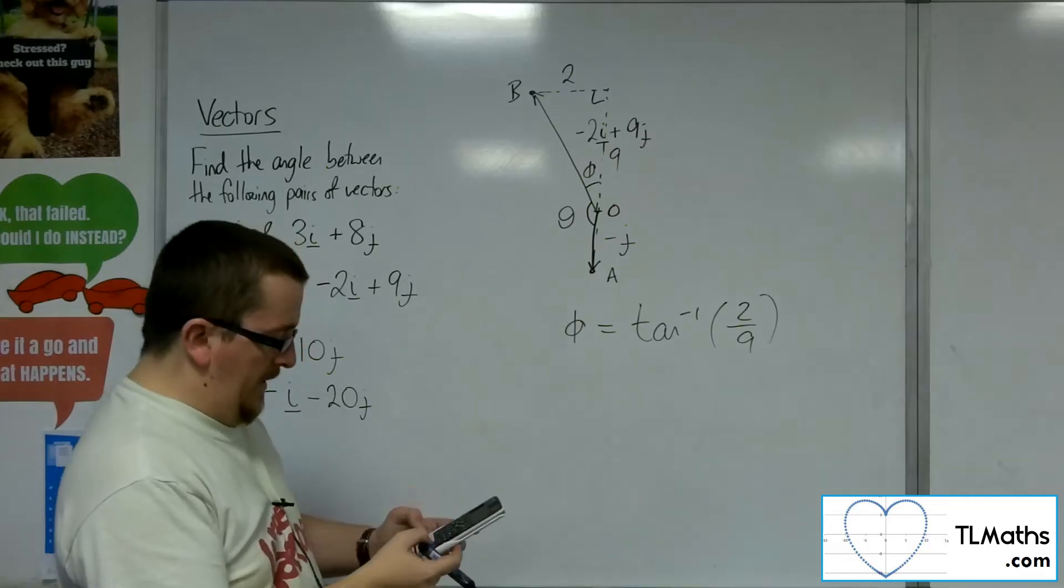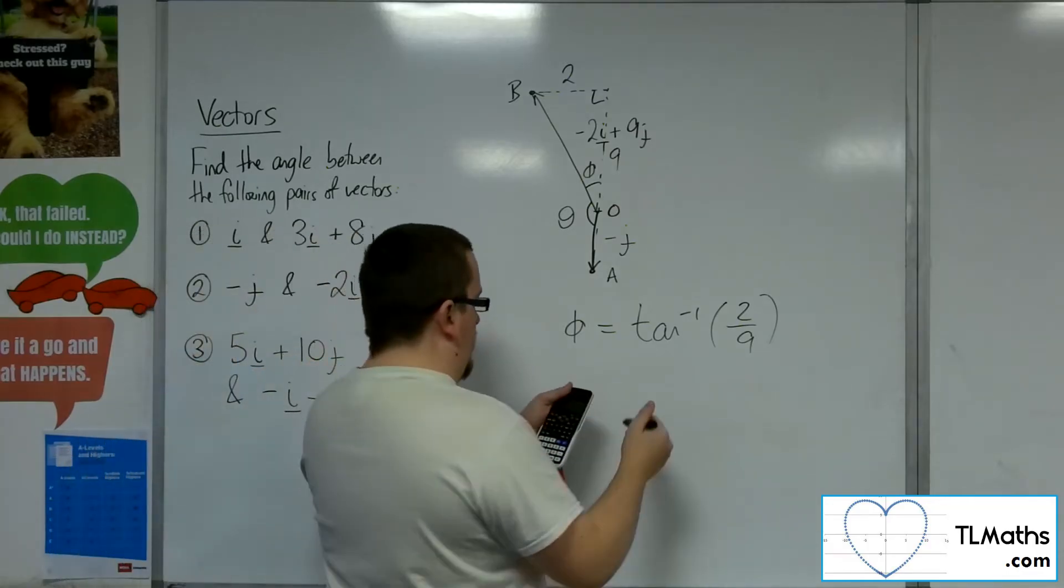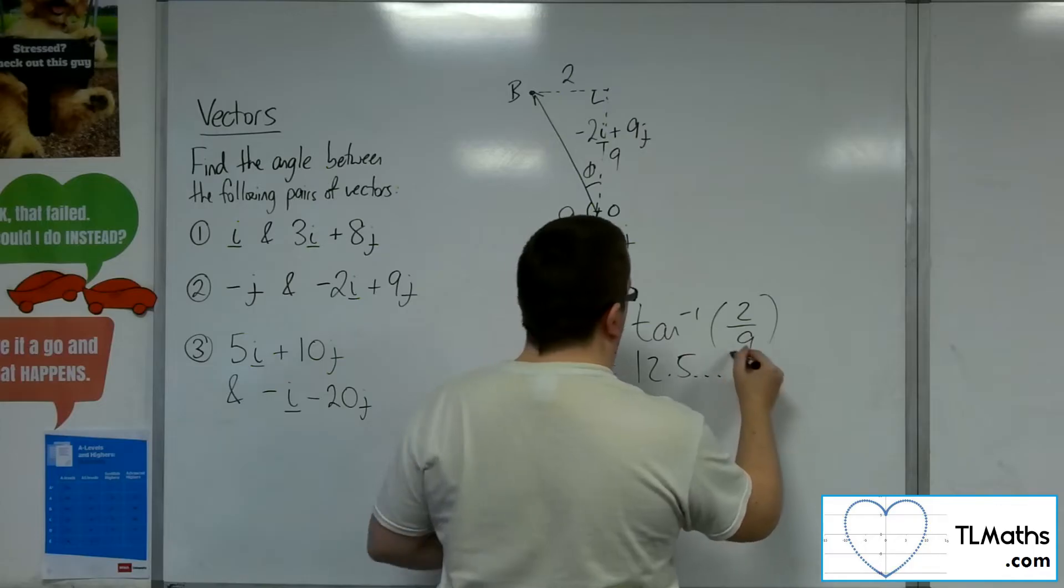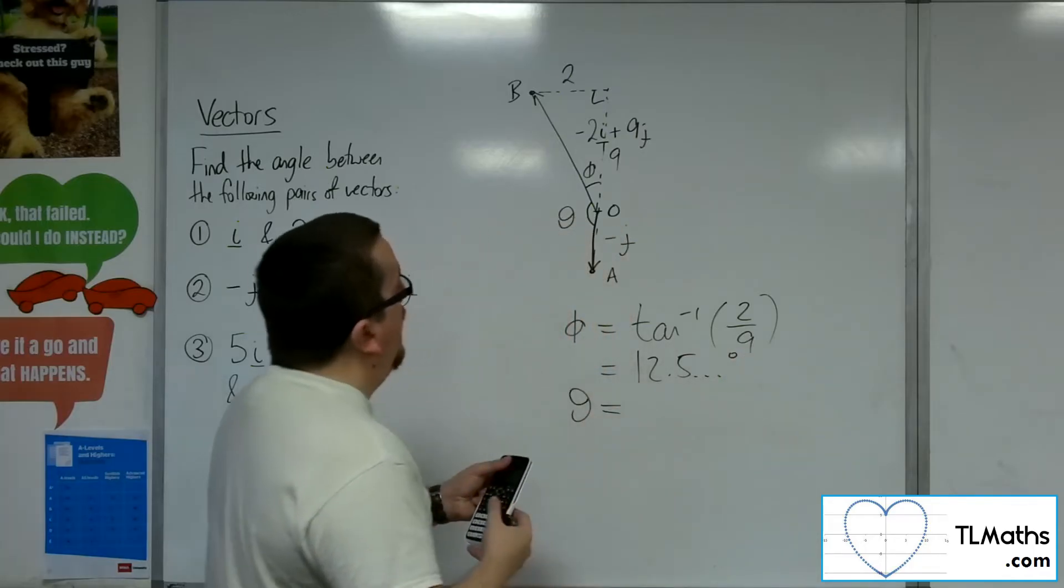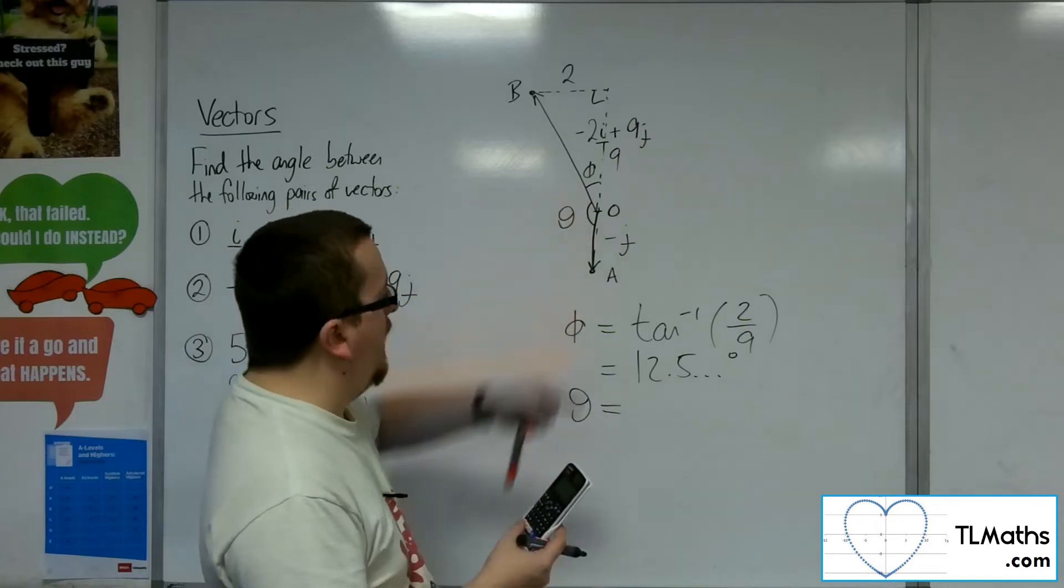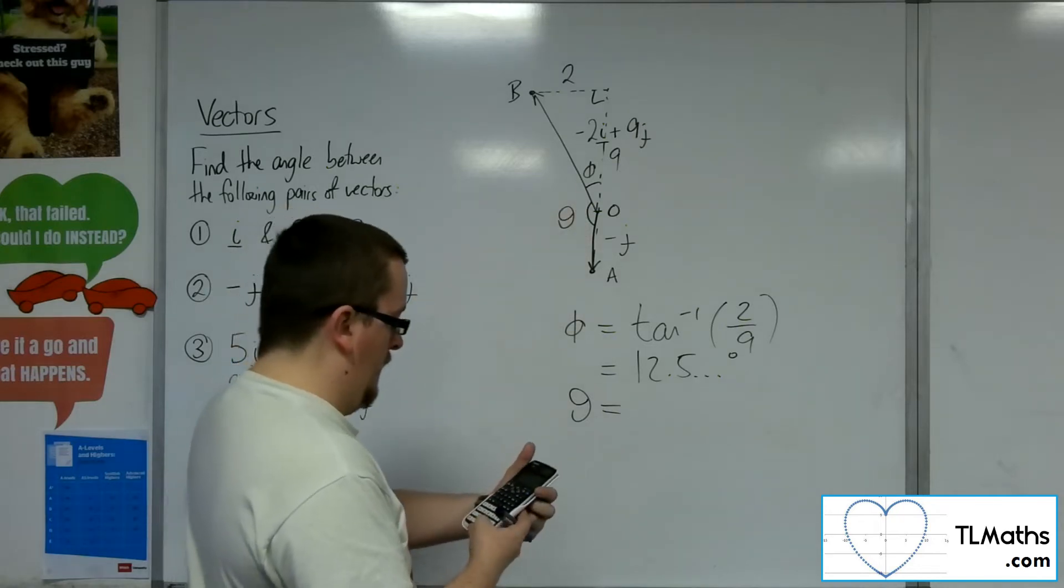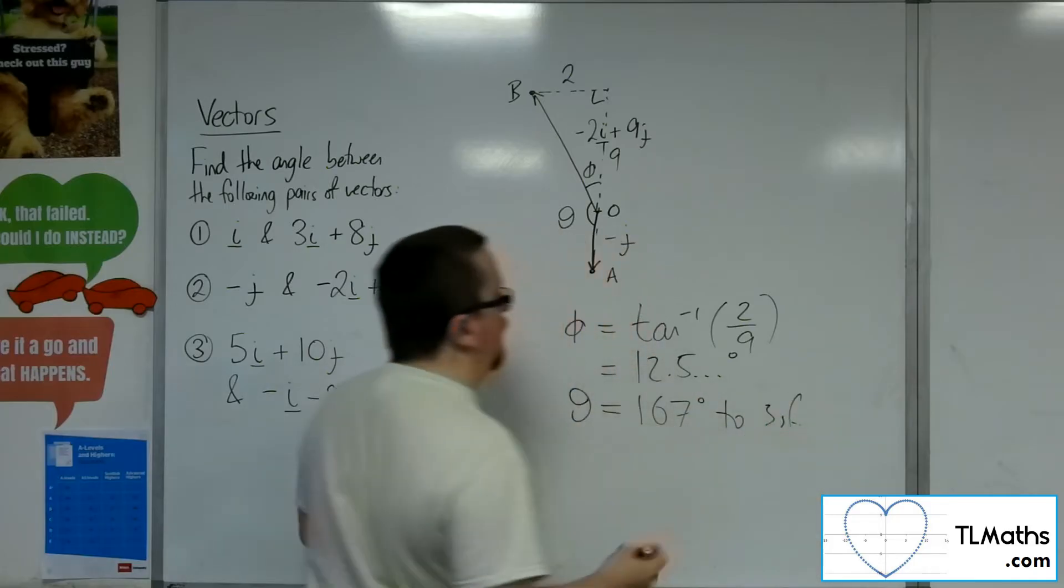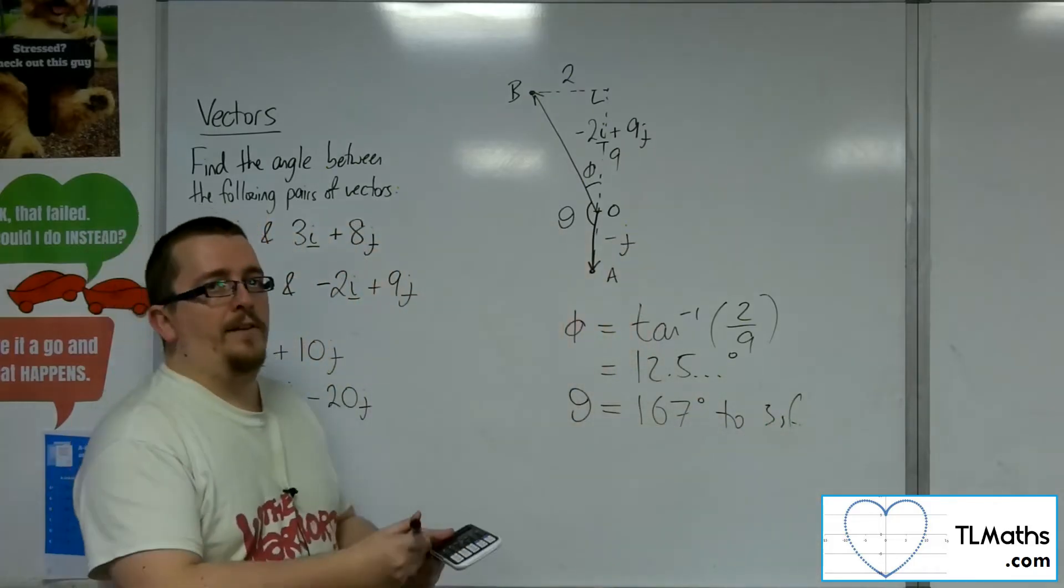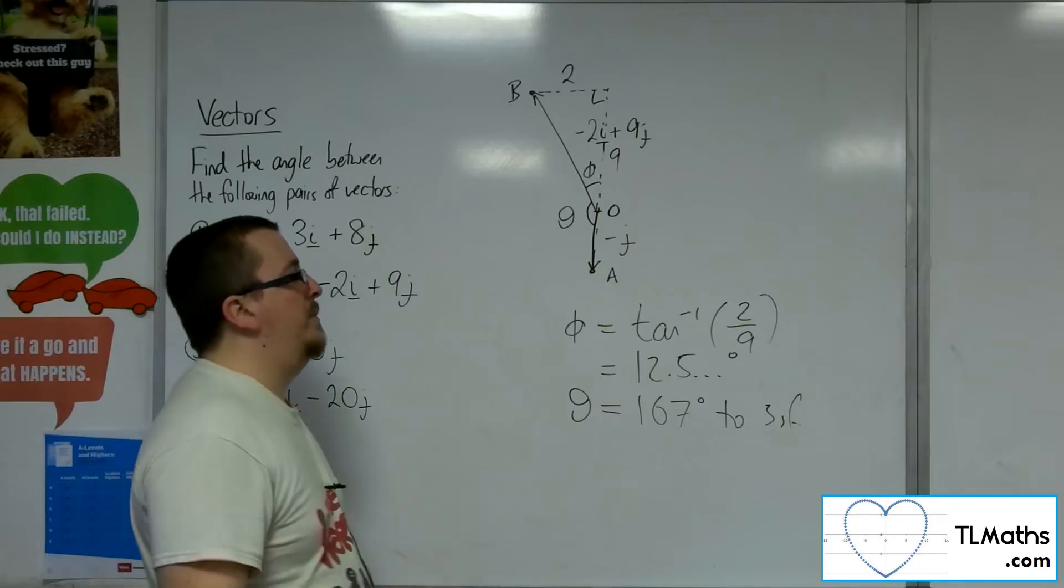So inverse tan of 2 ninths is 12.5 degrees. So theta will be 180 take away phi. So 167 degrees to 3 sig fig. And that is a lot easier than we had before.